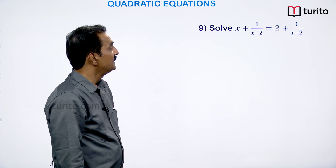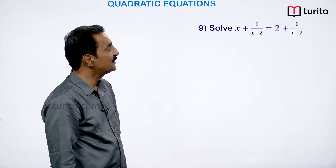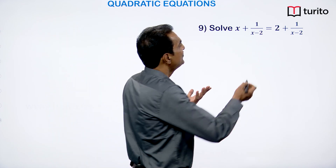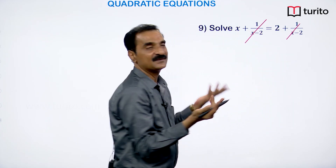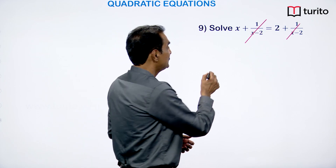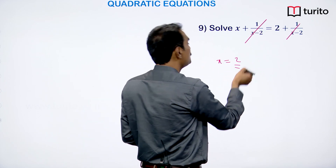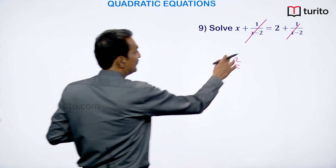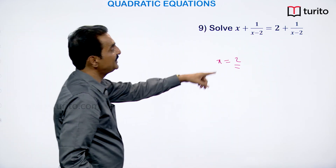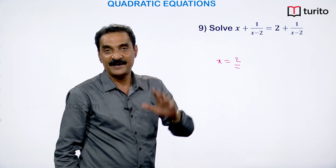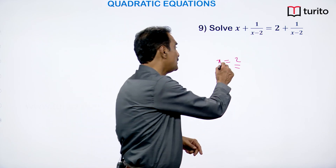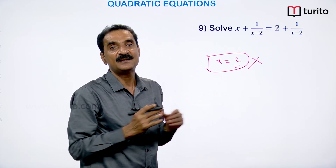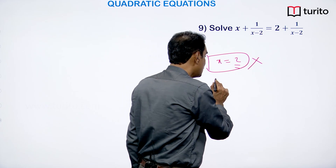Question: Solve (x + 1)/(x − 2) = 2 + 1/(x − 2). One might cancel 1/(x − 2) to get x = 2, but substituting x = 2 makes 1/(x − 2) = 1/0, which is undefined. Therefore x = 2 is rejected, and this equation has no solution.